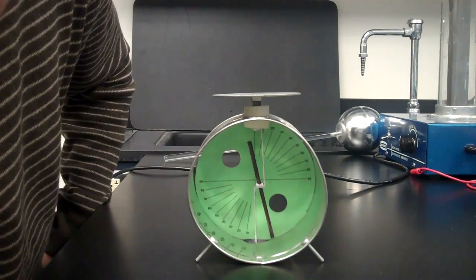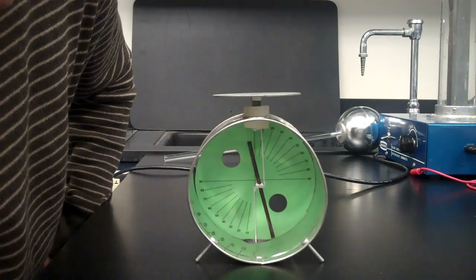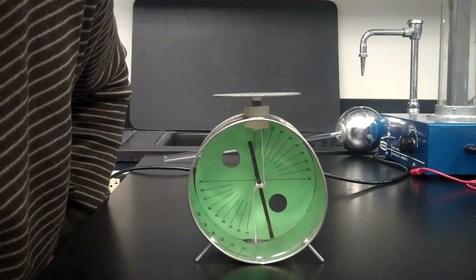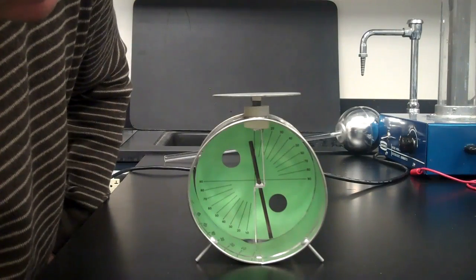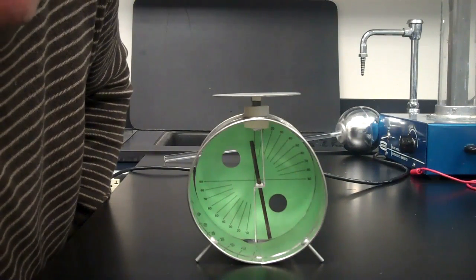It remains deflected because by placing my finger on the electroscope I allowed electrons to escape through my finger and into the ground. Now there's a shortage of electrons on the electroscope creating an overall positive charge.